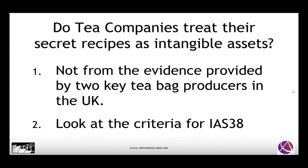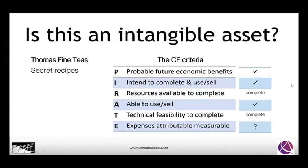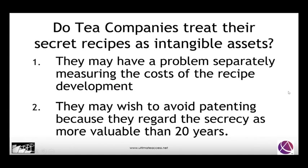Looking at the criteria for IAS 38, the secret recipes of Thomas Fine Teas do meet these criteria, and we would assume that expenses are attributable and measurable. However, they may have a problem separately measuring out costs, which could be one reason they don't capitalize them, or they may wish to avoid patenting because of secrecy — seeing the ability to retain that secret recipe for more than 20 years as more valuable.